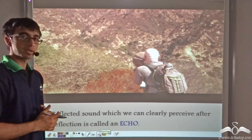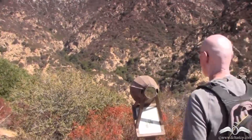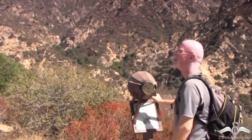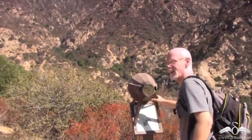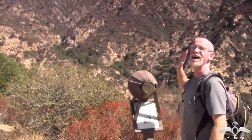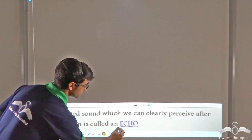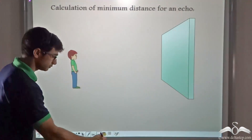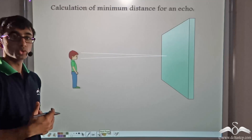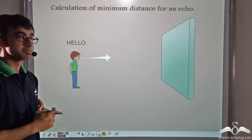When the man shouts out hello, he is able to hear his sound twice — once when he shouts and once again when the sound is reflected and comes back to him. This sound that we can clearly perceive after reflection is known as an echo. So you must be wondering what should be the minimum distance from you to the obstacle for you to hear an echo.